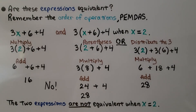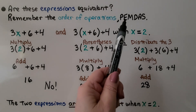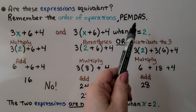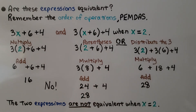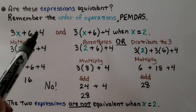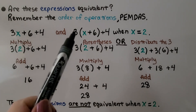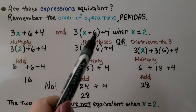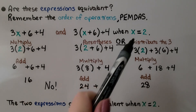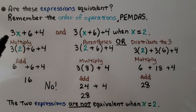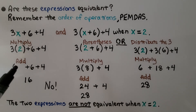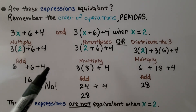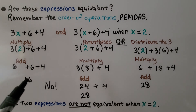Are these expressions equivalent? Remember the order of operations — PEMDAS: parentheses, exponents, multiply or divide (whichever comes first), add or subtract (whichever comes first from left to right). We have 3x plus 6 plus 4, and the other expression is 3 times (x plus 6) plus 4, when x equals 2. For the first expression, we substitute 2 for x: 3 times 2 is 6, plus 6 plus 4. That's 6 plus 10, which is 16.